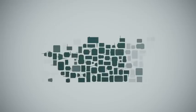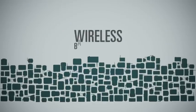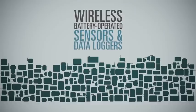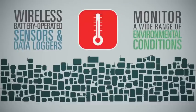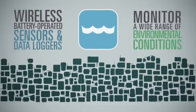At the center of the Infatrack solution is our robust array of wireless, battery-operated sensors and data loggers. We can monitor a wide range of environmental conditions, including temperature, humidity, flood detection, pressure differential, airflow, vibration, power consumption, and many more.